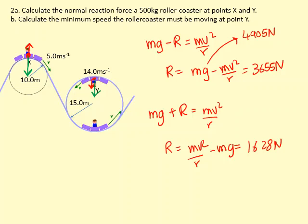The final question is calculate the minimum speed the roller coaster must be moving at point Y. So at point Y, this is the equation at Y.